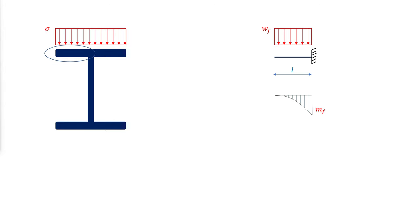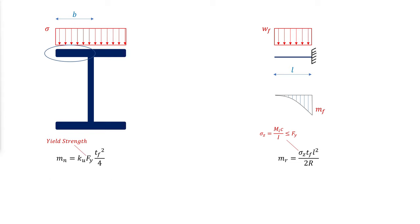For unstiffened elements, the design model shows the radial uniform force per unit area sigma acting transverse to the flange. The figure on the right shows the moment diagram for half of the flange, where WF is the force per unit length and L is the cantilever beam length. The maximum moment per unit length at the fixed end is the longitudinal flexural stress multiplied by the flange thickness and length squared divided by two times the radius of curvature. The fixed end of the cantilever is at the face of the web, and L equals B. The nominal flexural strength per unit length is evaluated with Fy being the yield strength and Ku being a reduction factor accounting for the effect of longitudinal flexural stresses caused by the member moment about the axis of curvature.